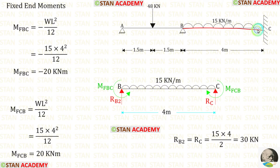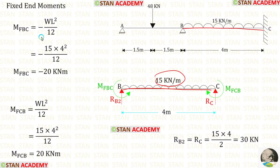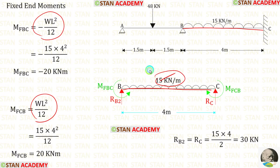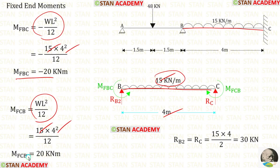Now let us find the fixed end moments and reactions in span BC. In span BC we have a uniformly distributed load acting for the full span. The formulas for finding the fixed end moments are −WL²/12 and +WL²/12, where W is 15 and L is 4. After calculation we get M_BC and M_CB.